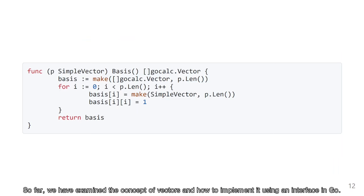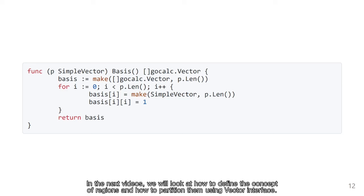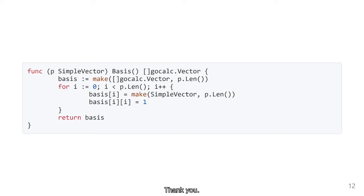So far, we have examined the concept of vector and how to implement it using an interface in Go. In the next video, we will look at how to define the concept of region and how to partition them using the vector interface. Thank you.